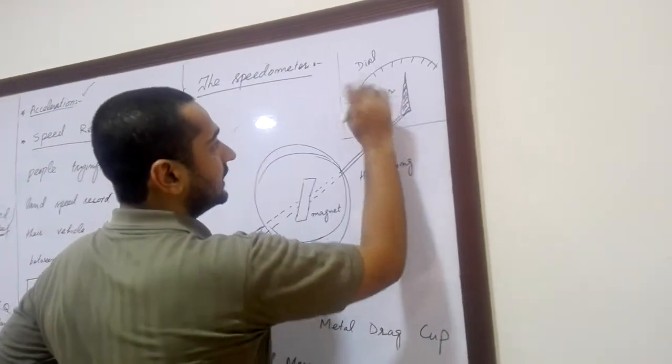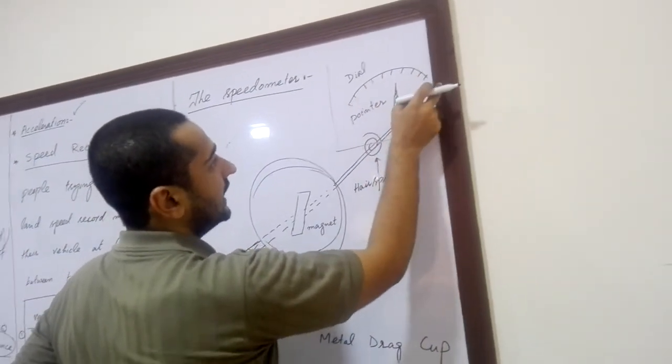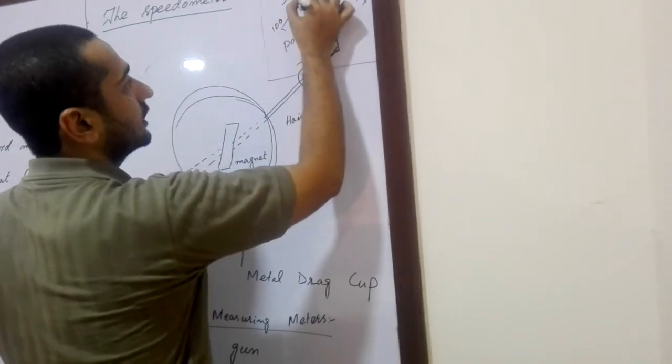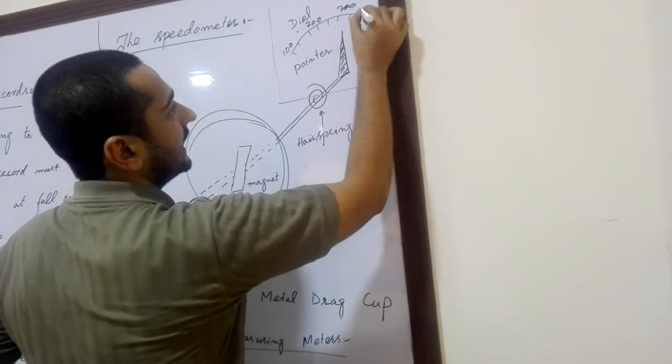And here the speed is mentioned: 20, 100, 200, 300, etc.